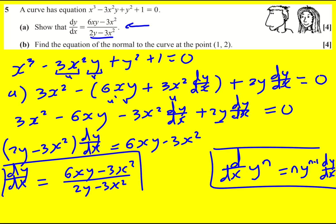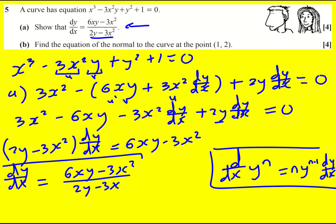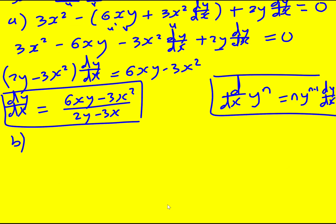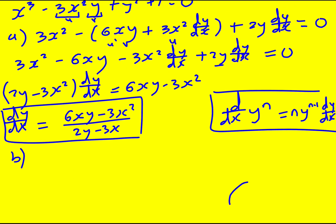Nicely done. Note: if you couldn't do part a, it doesn't stop you from doing part b because they've given us the derivative. So don't give up on these questions if you're struggling. Now: find the equation of the normal to the curve at the point (1, 2). I don't know what this curve looks like, but we could draw a tangent to it that has exactly the same gradient as the curve at the point in question. First up, let's look at the point (1, 2).